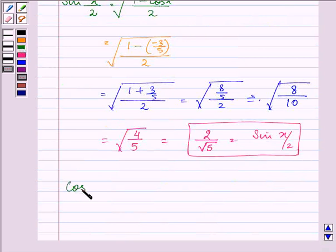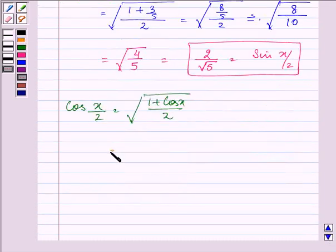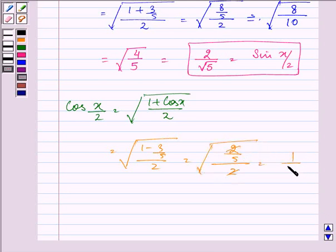Now let us proceed in finding cos x/2. It is equal to square root of (1 plus cos x)/2. Substituting the values we have square root of (1 minus 3/5)/2, which gives us square root of (2/5)/2, that is square root of 1/5, equal to 1 by root 5. That is cos x/2.